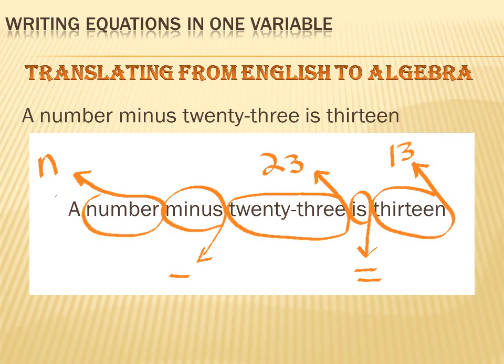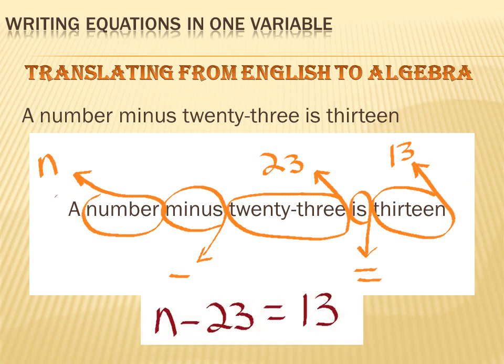The next part takes a little experience: when you see the word 'is' in a word problem, you want to translate it to equals. Then 13 is easy — that's just the number 13. So we rewrite the whole sentence as: n minus 23 equals 13. That wasn't hard, was it?